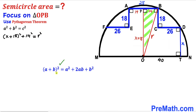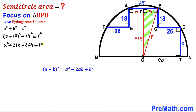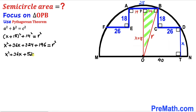Applying the identity (a + b)² = a² + 2ab + b², we expand to get: x² + 36x + 324 + 196 = r². Combining like terms gives us x² + 36x + 520 = r². I'll label this as equation 1.